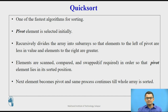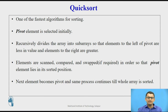There are some variations in the implementation of quick sort. Many times the last element in the array is used as the pivot element, or a random element from the array is selected as the pivot. However, here we are going to select the first element as the pivot element.